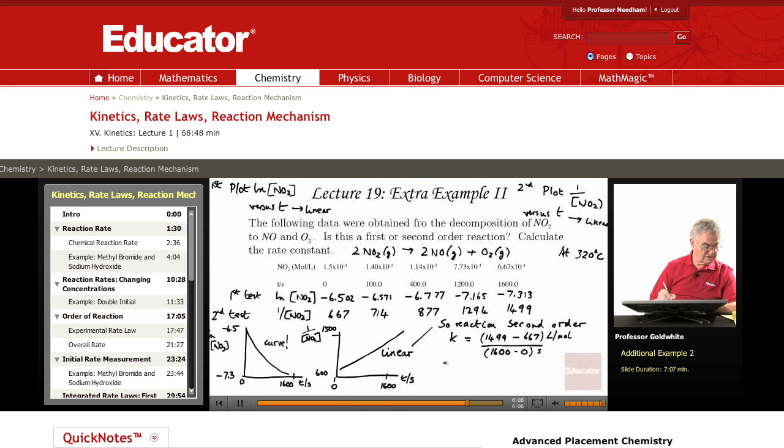So the rate constant is 0.52 liters per mole second. The rate law is the rate equals this k times NO2 squared. That actually tells us something about how this reaction proceeds. It must proceed through two NO2 molecules colliding together and sticking together for a while in what is called the transition state or the activated complex. And then breaking down to give two NO molecules and an O2 molecule.